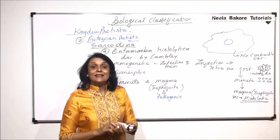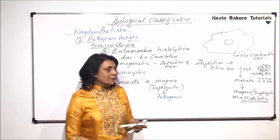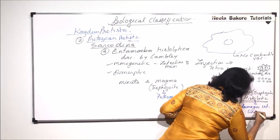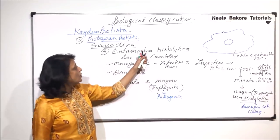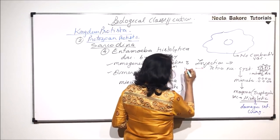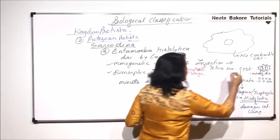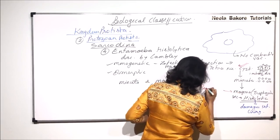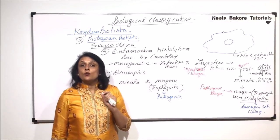The histolytic substance damages and digests the tissue of the alimentary canal, breaking down the lining of the intestine. The word 'histo' refers to tissue and 'lysis' refers to breakdown — hence the name histolytica. The infective stage is the tetranucleate cyst, and the pathogenic stage is magma.